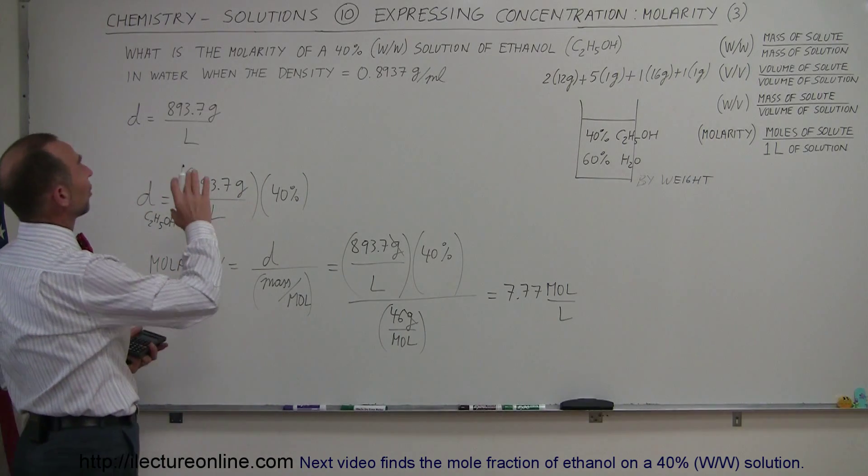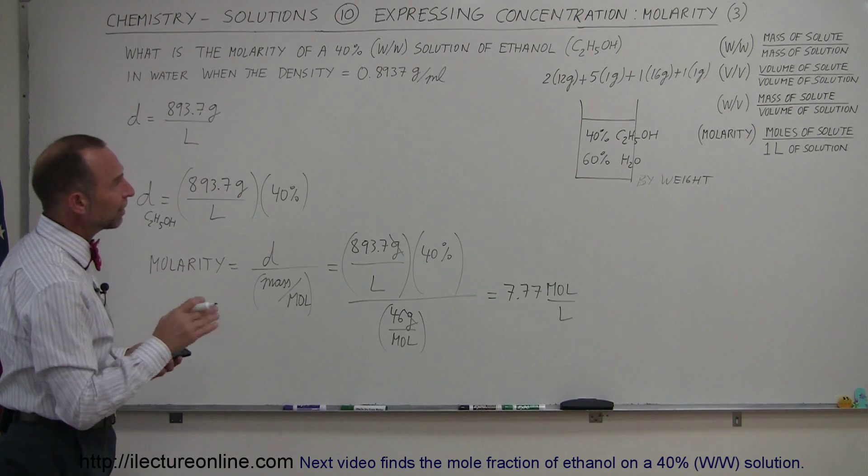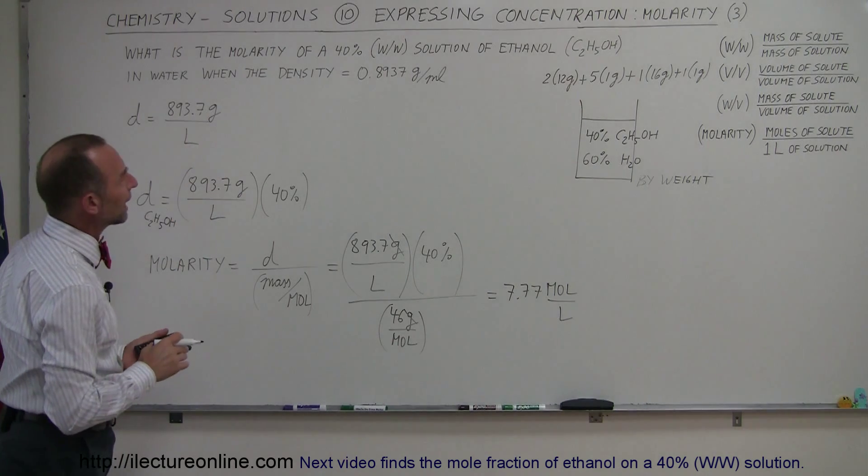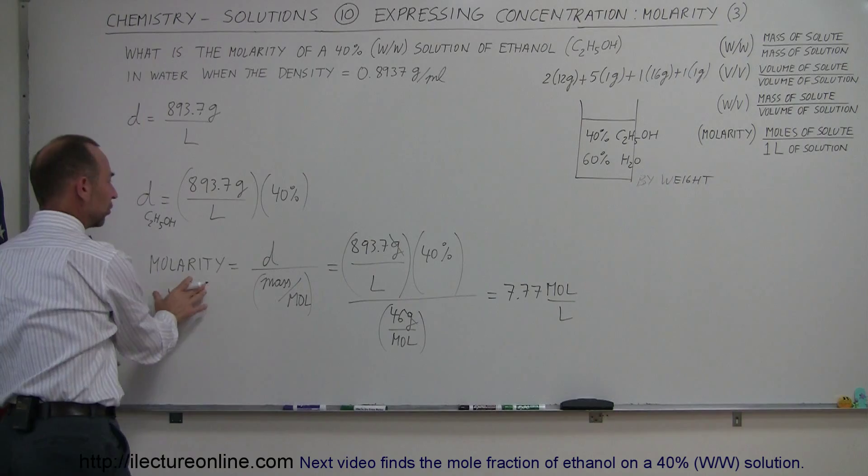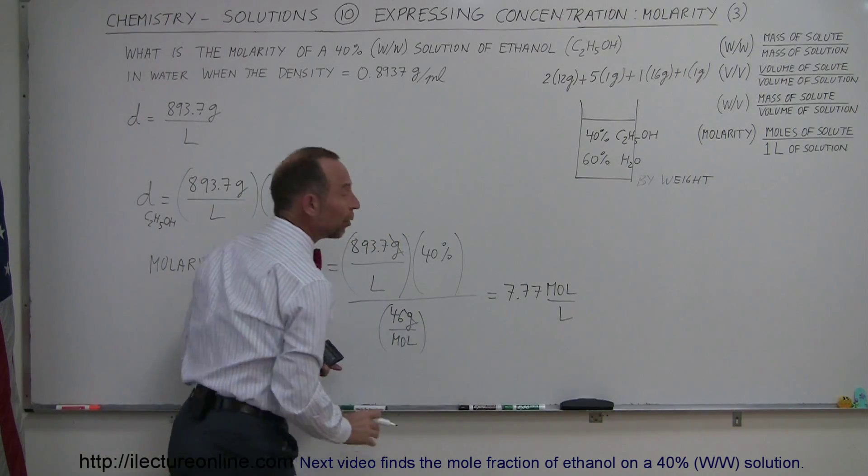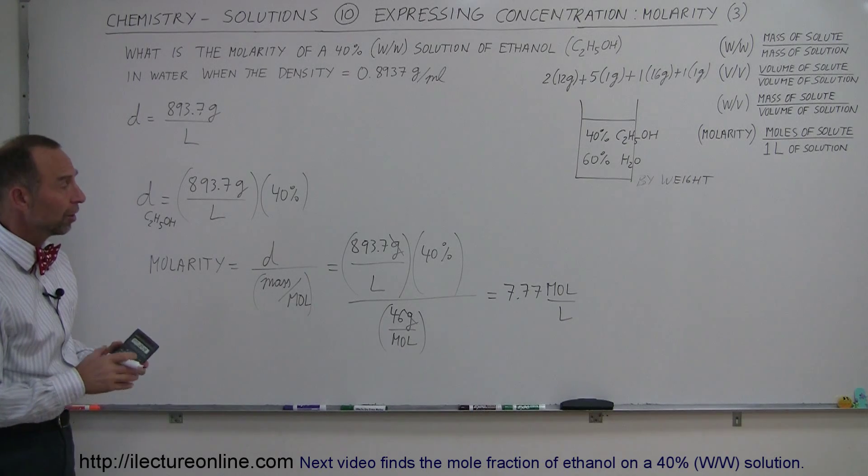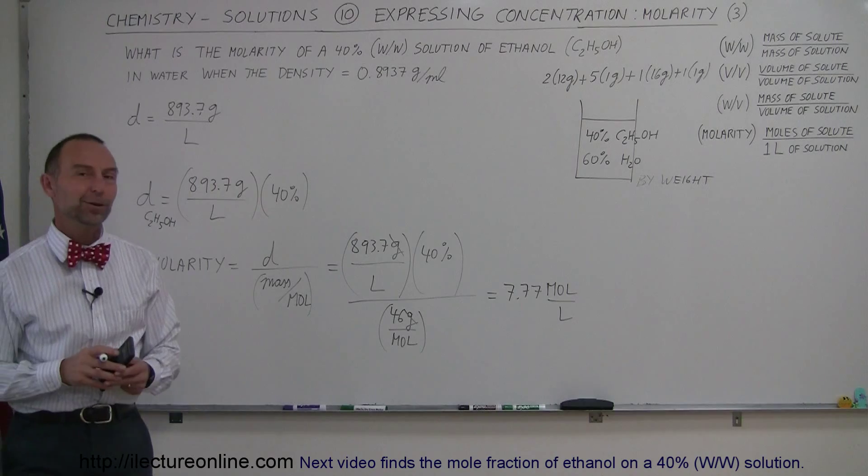So therefore, if we have a solution that is 40% weight in weight of ethanol to the total solution in water, when the density is 0.8937 grams per milliliters, the molarity of that solution is equal to 7.77 moles per liter. And that's what it is. If you have 1 liter of that solution, 7.77 moles of ethanol will be within it. And that's how you do that.